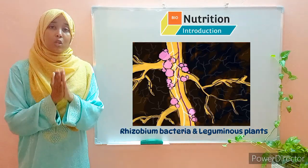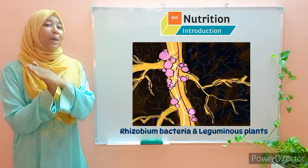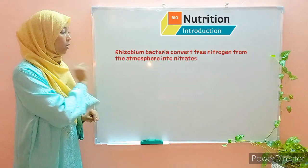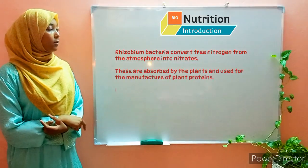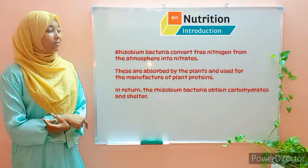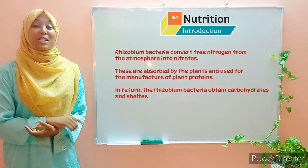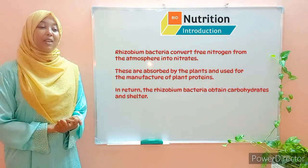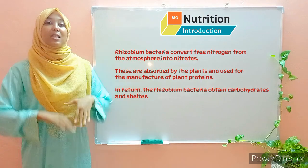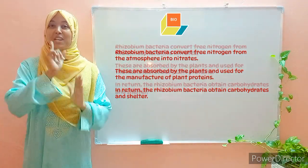In case you are asked to state one example of a symbiotic relationship and explain, you can use the Rhizobium and leguminous plants example. This brings us to the end of our lesson today. I'll be uploading another video that discusses the external and internal structure overview, so be sure to check it out.